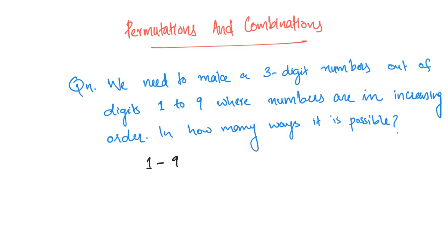For example, 253 is not possible. 278 is possible because 7 is greater than 2 and 8 is greater than 7. So, how can we create such numbers?